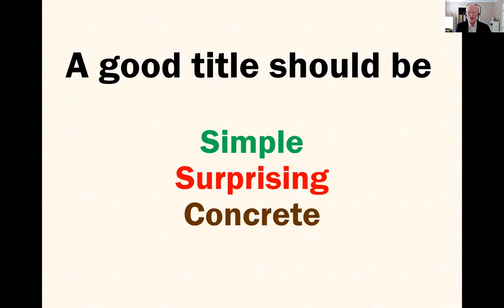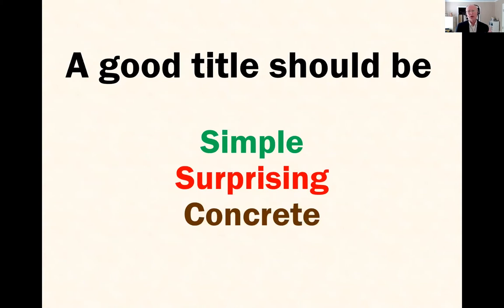Concrete is the least concrete of all these terms, but it's the easiest to understand. You want it to be specific — you want the title to tell the audience what the paper is about in as much detail as possible. We'll look at some examples and these things will become more clear. Eventually, as you understand these ideas, you'll just think about clear titles versus unclear titles, without having to go through the process of asking: is this title simple, surprising, and concrete?